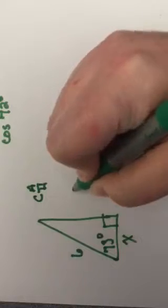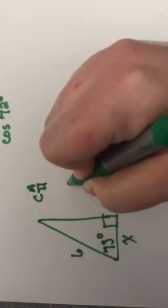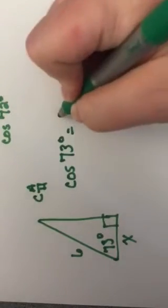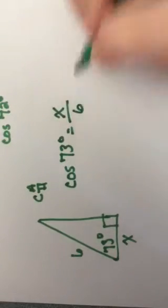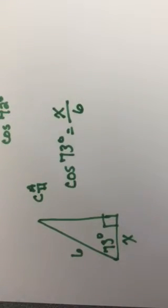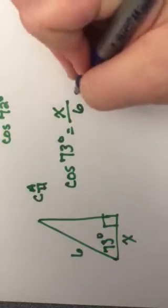Let's write our equation like we did before. Cosine 73 degrees equals adjacent over hypotenuse. Now we just work out our equation.